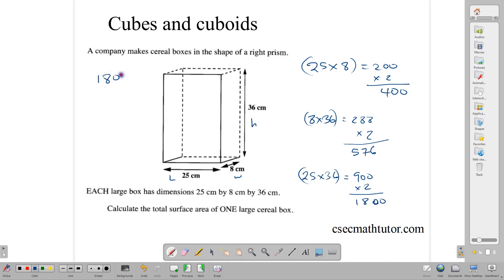So 1,800 plus 576 plus 400. And that will give us the total for all of the sides. Here we add it, we have a 6, we have a 7, we have 8 plus 4, 12, 12 plus 5, 17, and 2. So we have a total of 2,776 centimeters square. And that would be the total surface area for the cuboid. That's how we calculate the surface area of a cube or the surface area of a cuboid. Thank you for watching.